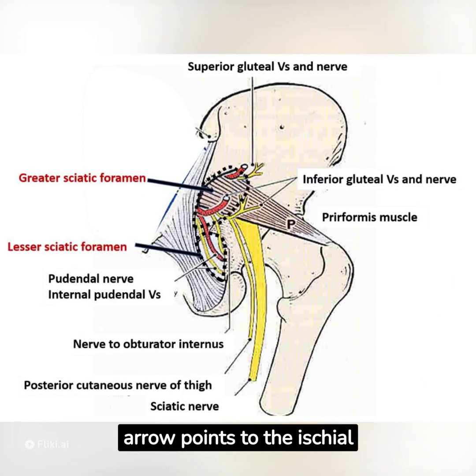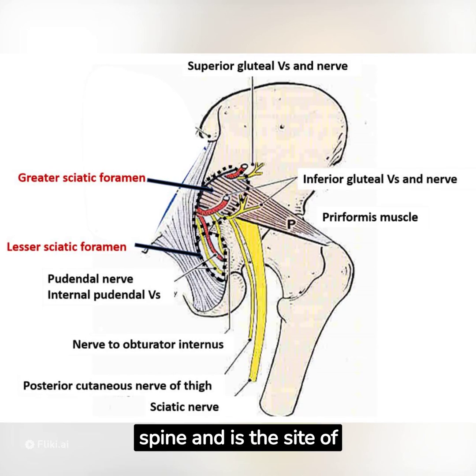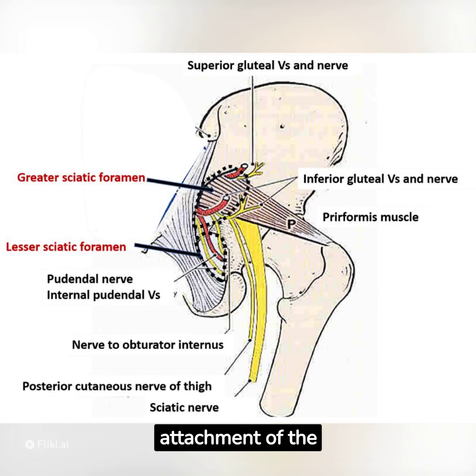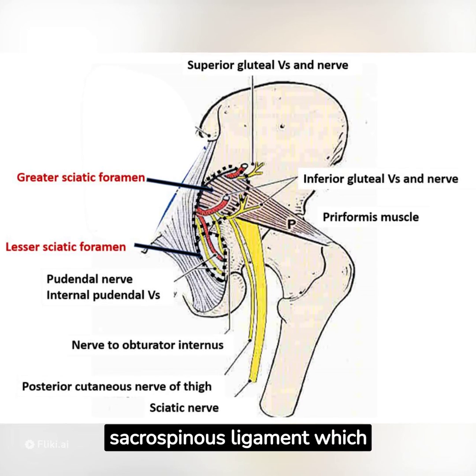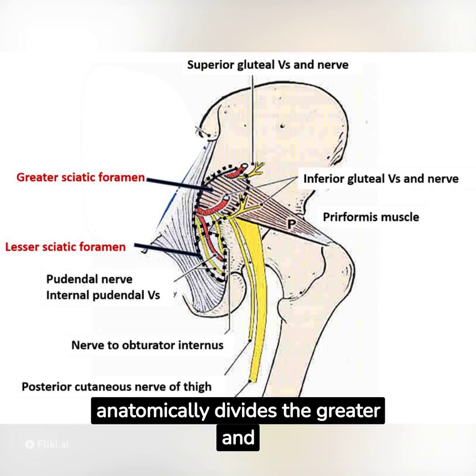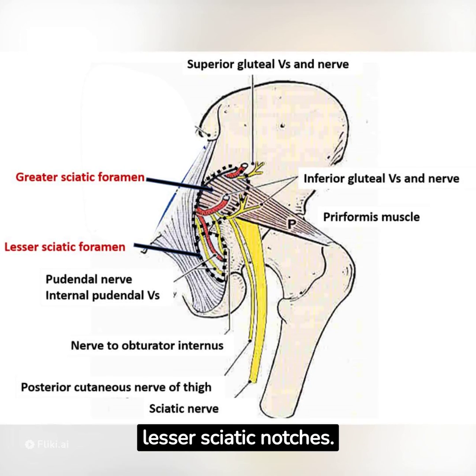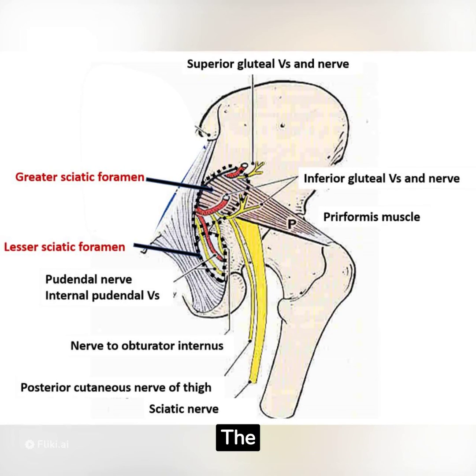Explanation. The arrow points to the ischial spine, which is the site of attachment of the sacrospinous ligament, anatomically dividing the greater and lesser sciatic notches.